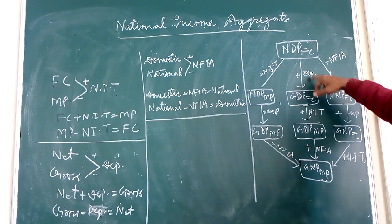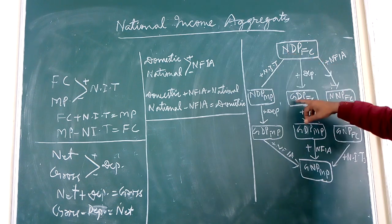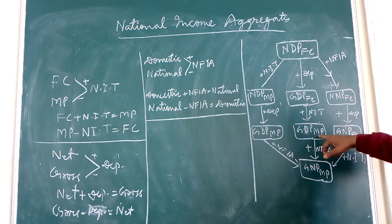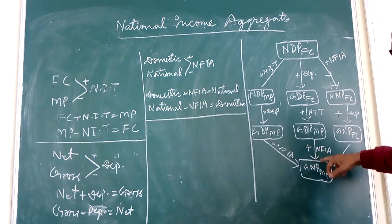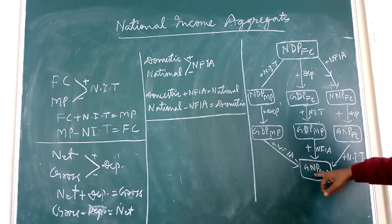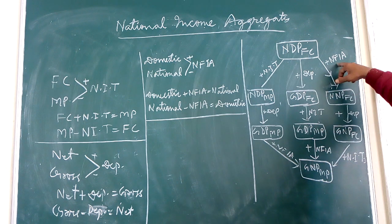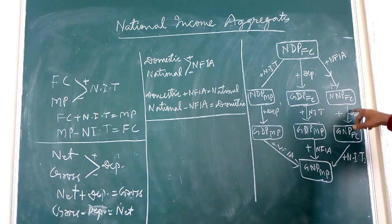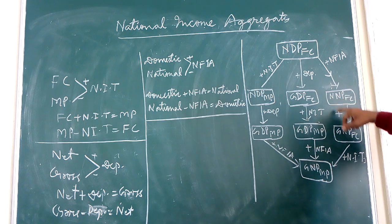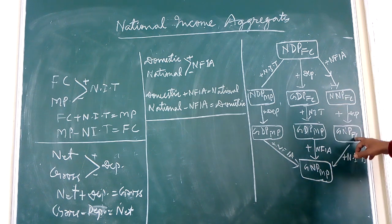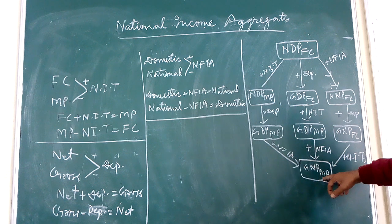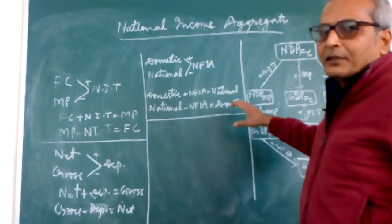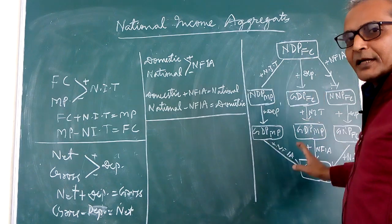Similarly when we add NIT this gets converted. So by adding or subtracting NIT, depreciation and NFIA, we can convert all the aggregates of the national income. Thank you.